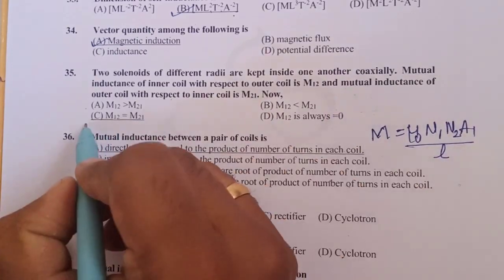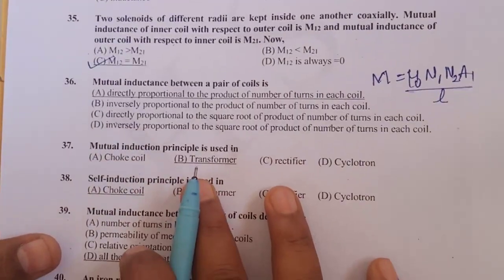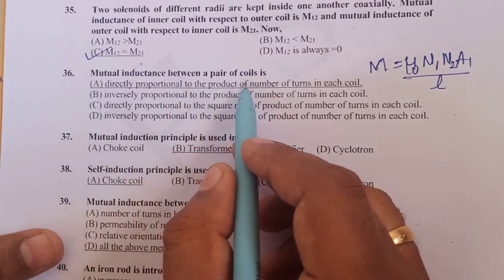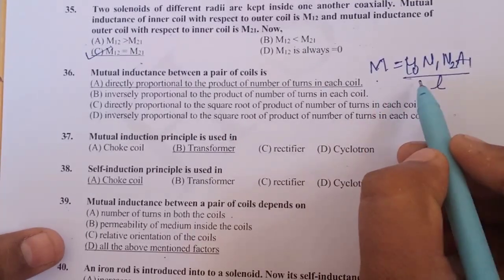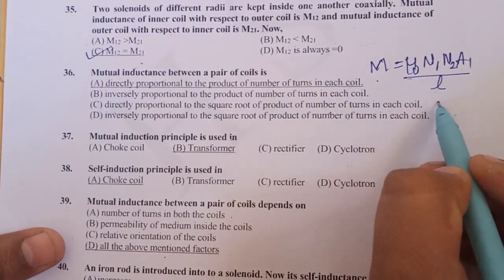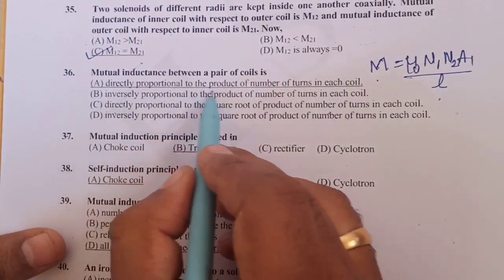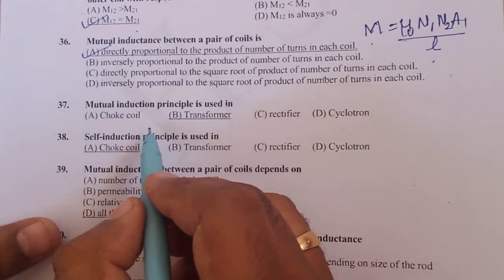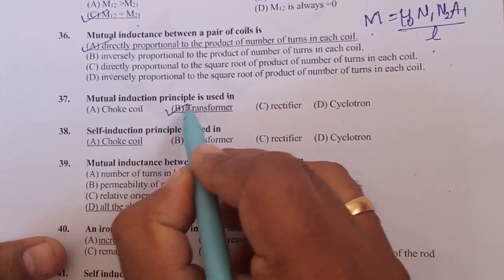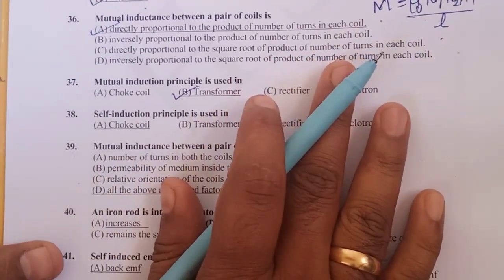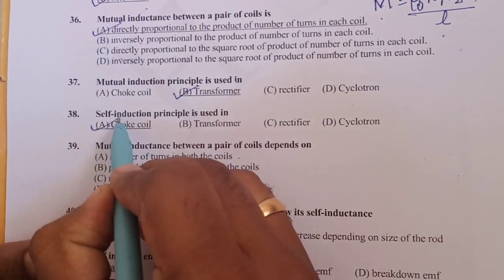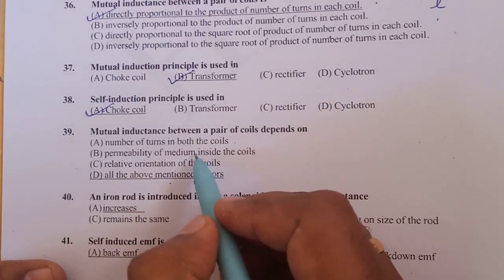Two solenoids of different radii kept inside one another coaxially. Mutual inductance of inner coil with respect to outer coil M12, both will be equal, M12 is equal to M21. Mutual inductance between a pair of coils is given by M is equal to μ₀ N1 N2 A1 divided by L. It is directly proportional to the product of number of turns in each coil. Mutual inductance principle is used in transformer. Self inductance principle is used in choke.